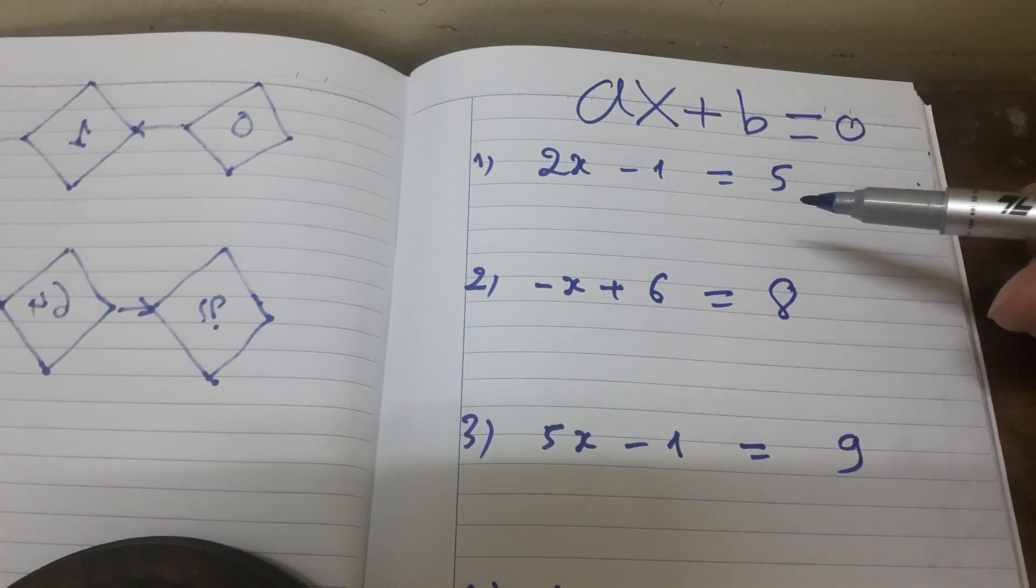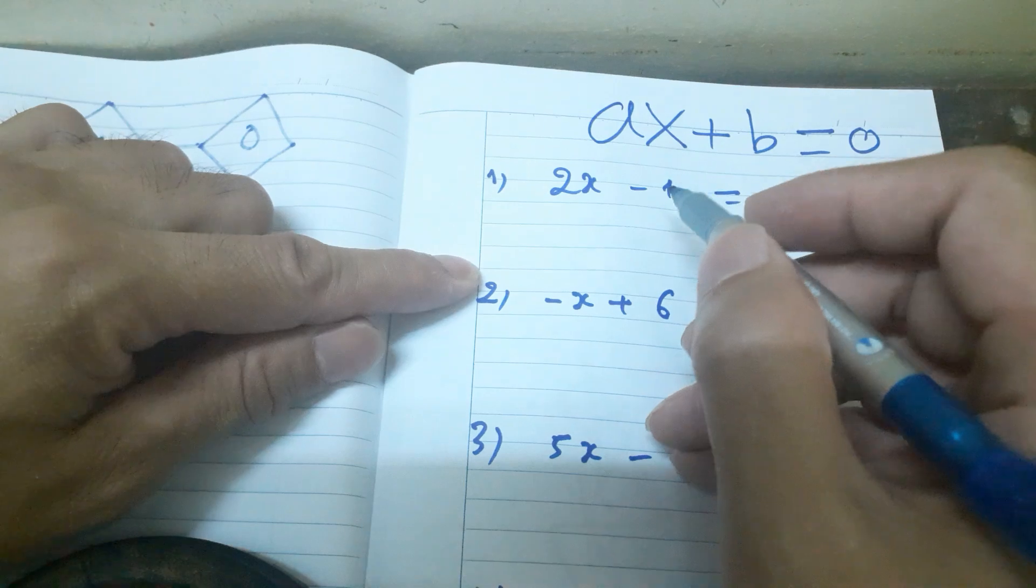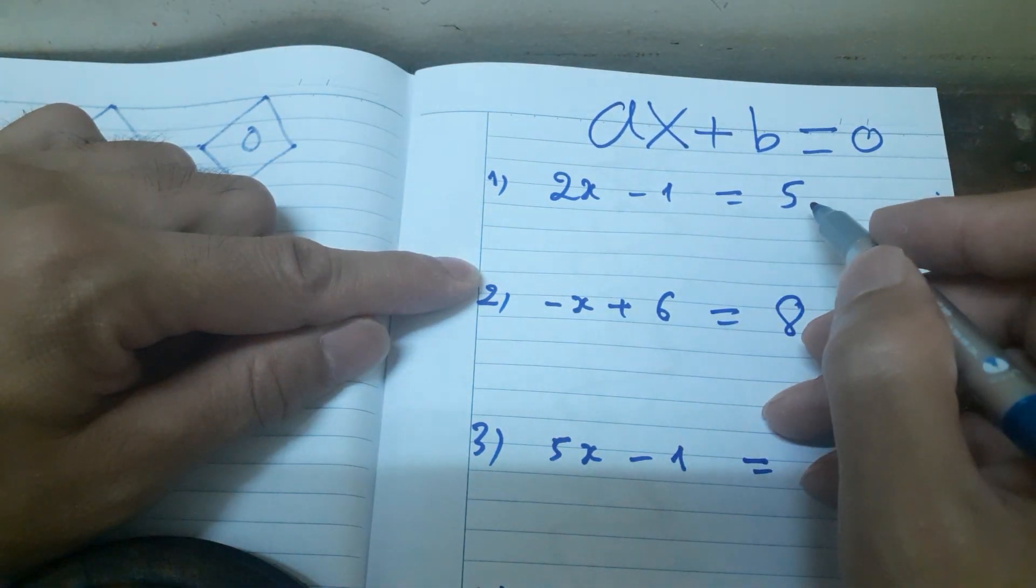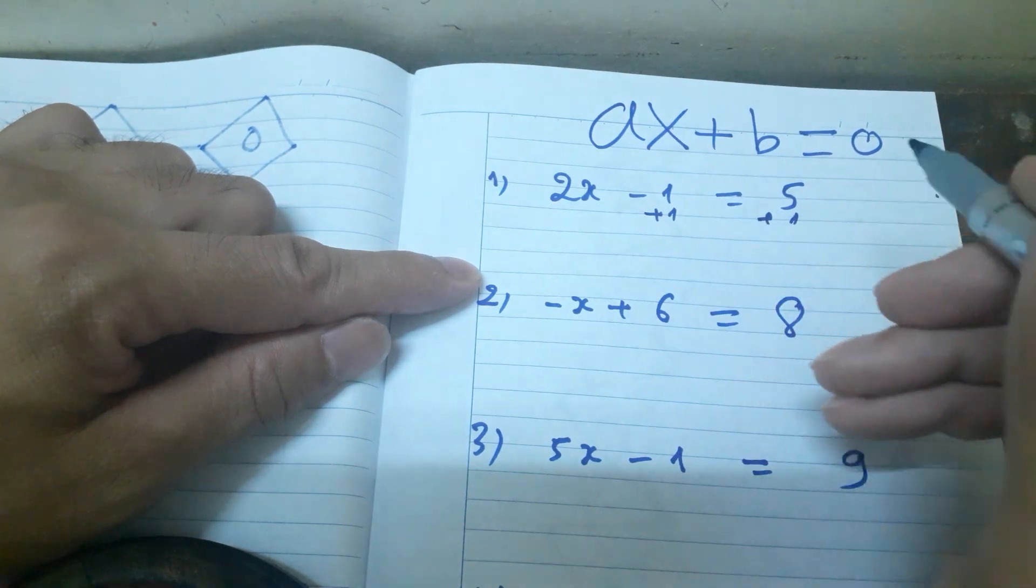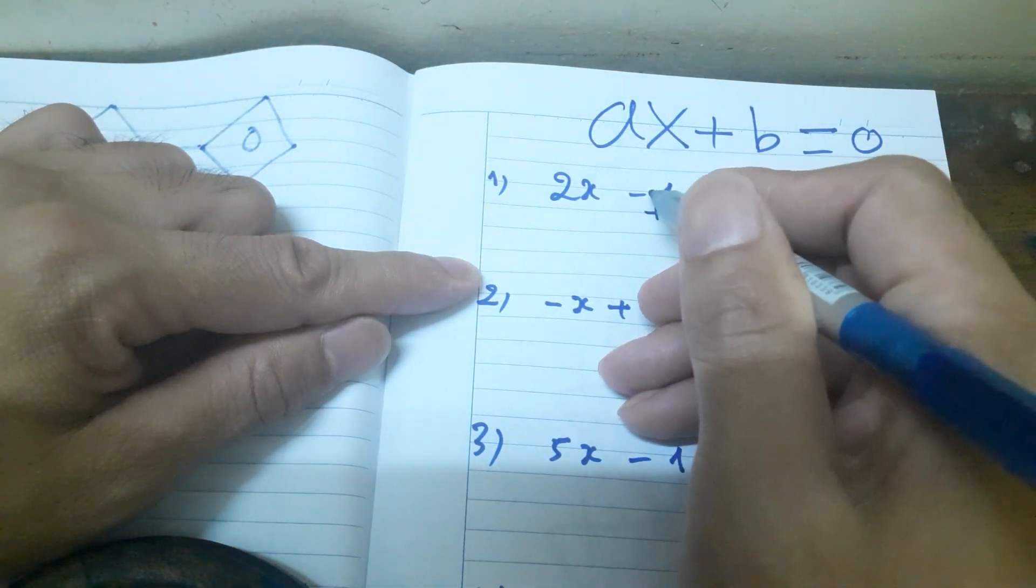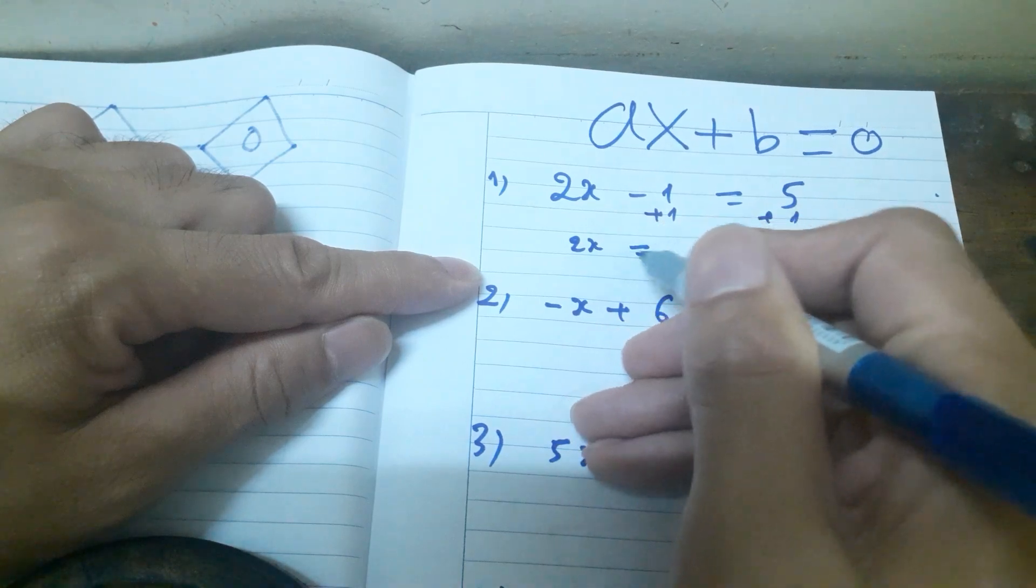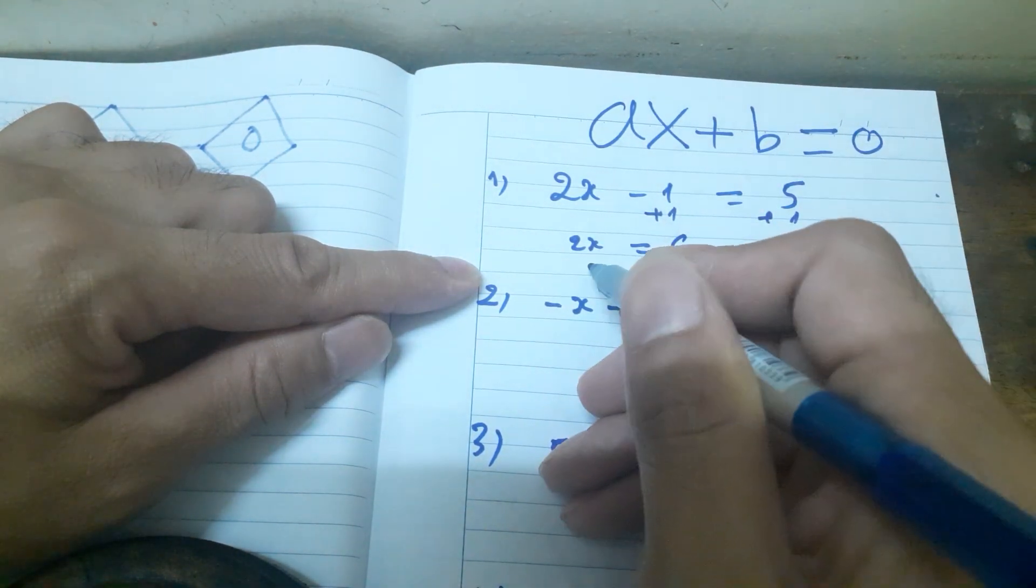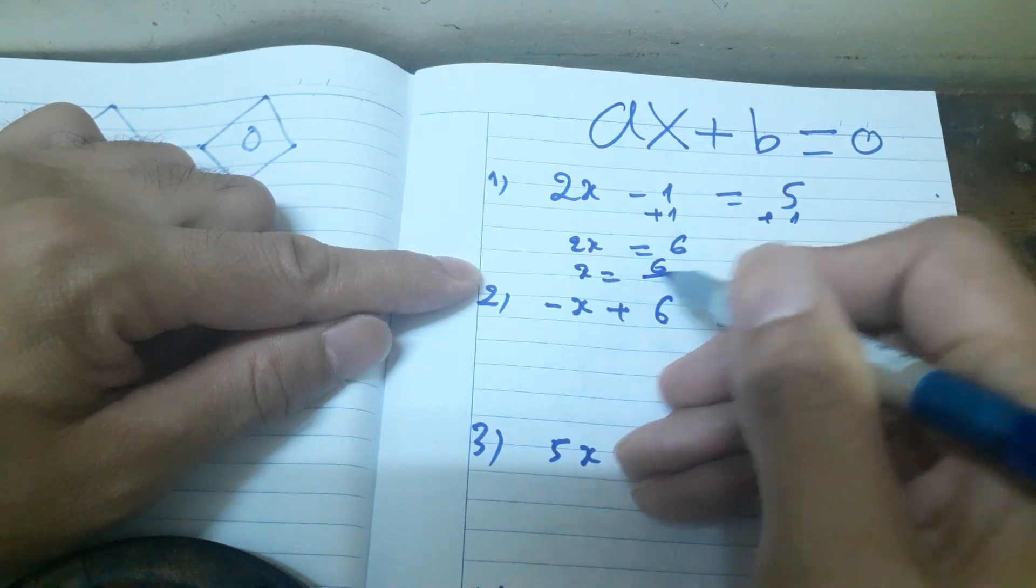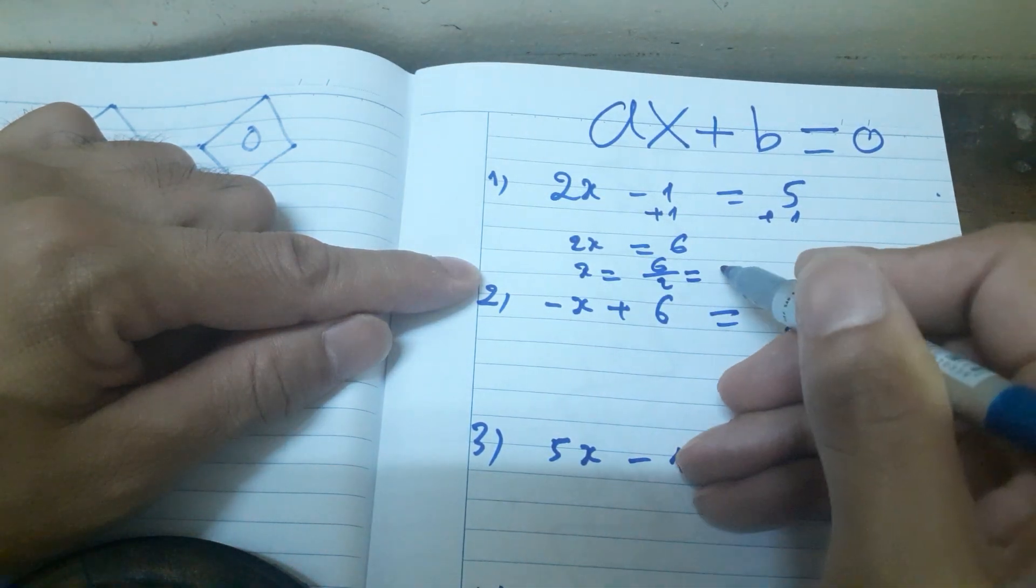Example 1: 2x - 1 = 5. First, move -1 to the other side. This equals zero. 2x equals 5 + 1, which equals 6. x equals 6 divided by 2 equals 3.